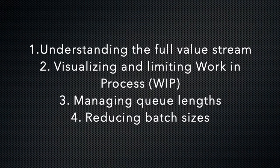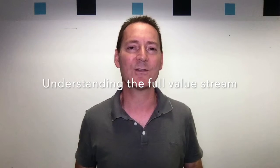The goal of lean is to deliver customer value in the shortest sustainable lead time. To achieve this, lean enterprises strive for a state of continuous flow where they can quickly move new system features from concept to cash. So how do we optimise flow in product development? Fortunately, there are several things we can do, including: understanding the full value stream, visualising and limiting work in process, thirdly managing queue lengths, and fourthly reducing batch sizes.